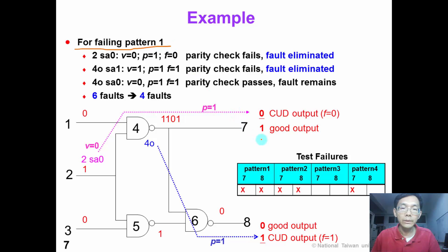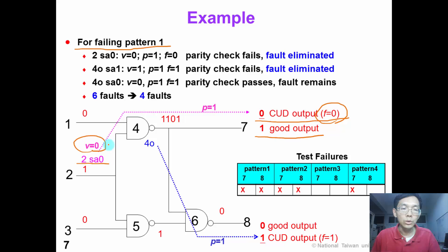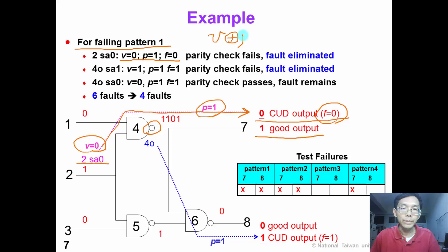For failing pattern number 1, the good output is 1, however the CUT output is 0, so the value of F equals 0. Now let's check input 2 stuck-at-0: the value of V equals 0, and on the propagation path we have one inverter, so the inversion parity P is 1. If we plug these values into our equation where V XOR P should equal F, we find that 0 XOR 1 equals 1, which does not equal F=0. So this fault fails the check and should be eliminated from our candidate fault list.